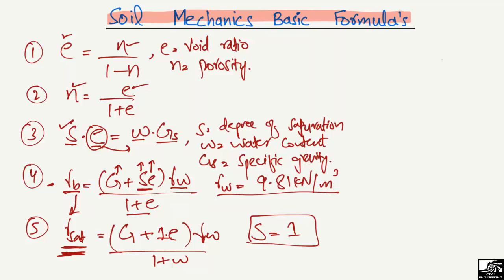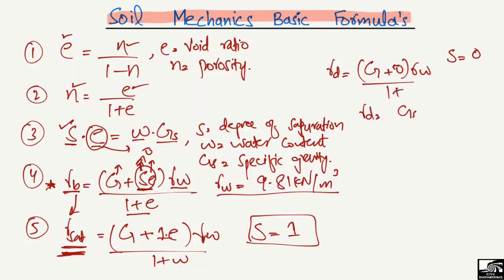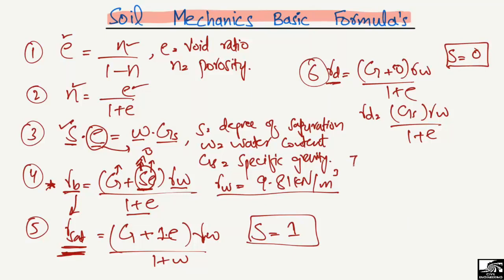Similarly, for the dry unit weight, the degree of saturation S = 0, since there is no saturation in a dry soil. Substituting S = 0 into the bulk unit weight formula makes the S·e term equal to zero, giving the sixth formula: γ_dry = Gs·γw / (1+e).